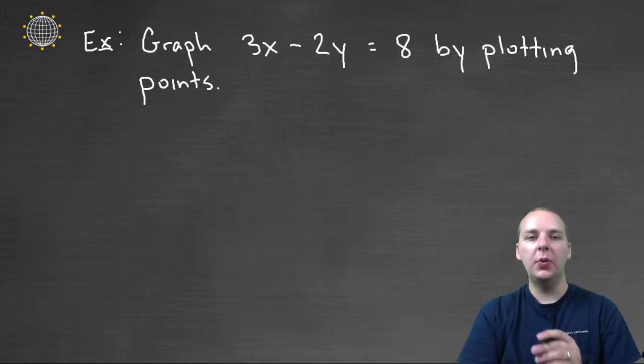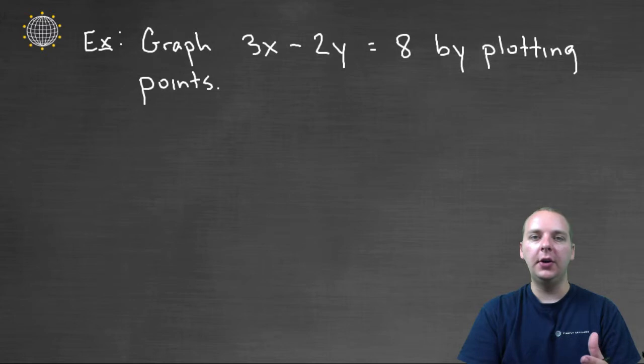Let's see if we can graph the linear equation 3x minus 2y equals 8 by plotting points. Now if you've already watched our video on how to graph linear equations by plotting points, you'll remember that the first step that we need to do is isolate this y, to solve for y first.